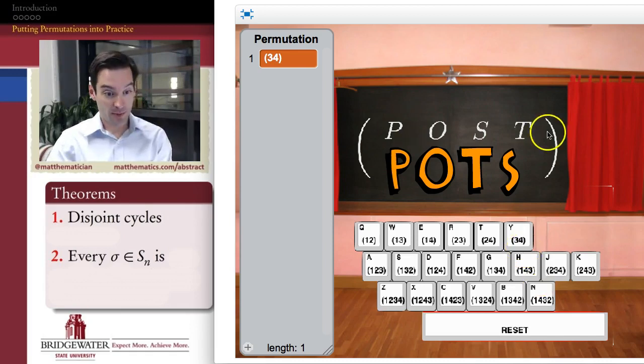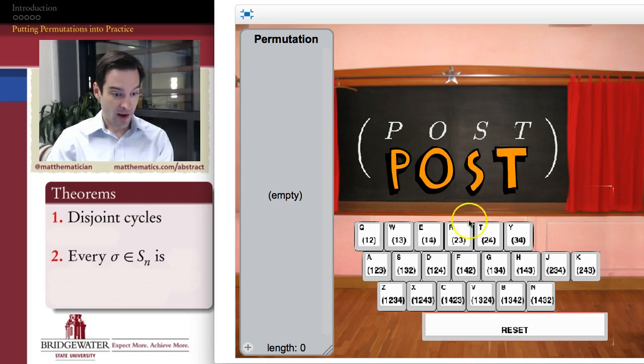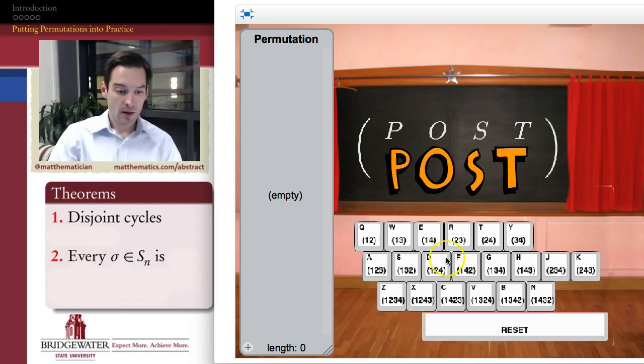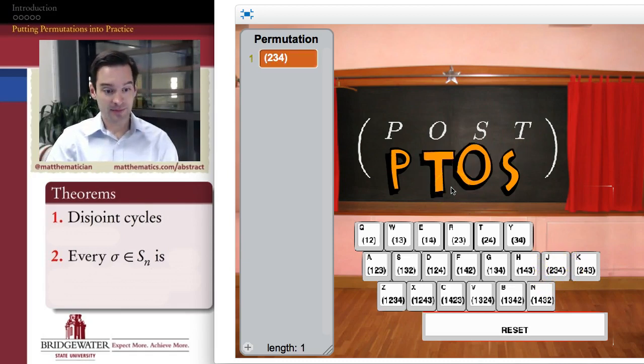So 3, 4, for example, turns post into pots. 1, 3, for example, would turn POST into SOPT, and so forth. Okay, so how about the three cycles? What do those end up looking like? Let me take one of them like 2, 3, 4. So what does that mean? That means that the second symbol is going to end up in the third position, the third symbol is going to end up in the fourth position, and the fourth symbol is going to end up wrapping around to the second position. If I apply that, what I get is PTOS, right? 2 goes to 3, 3 goes to 4, 4 goes back to 2. And here 1 has stayed put.